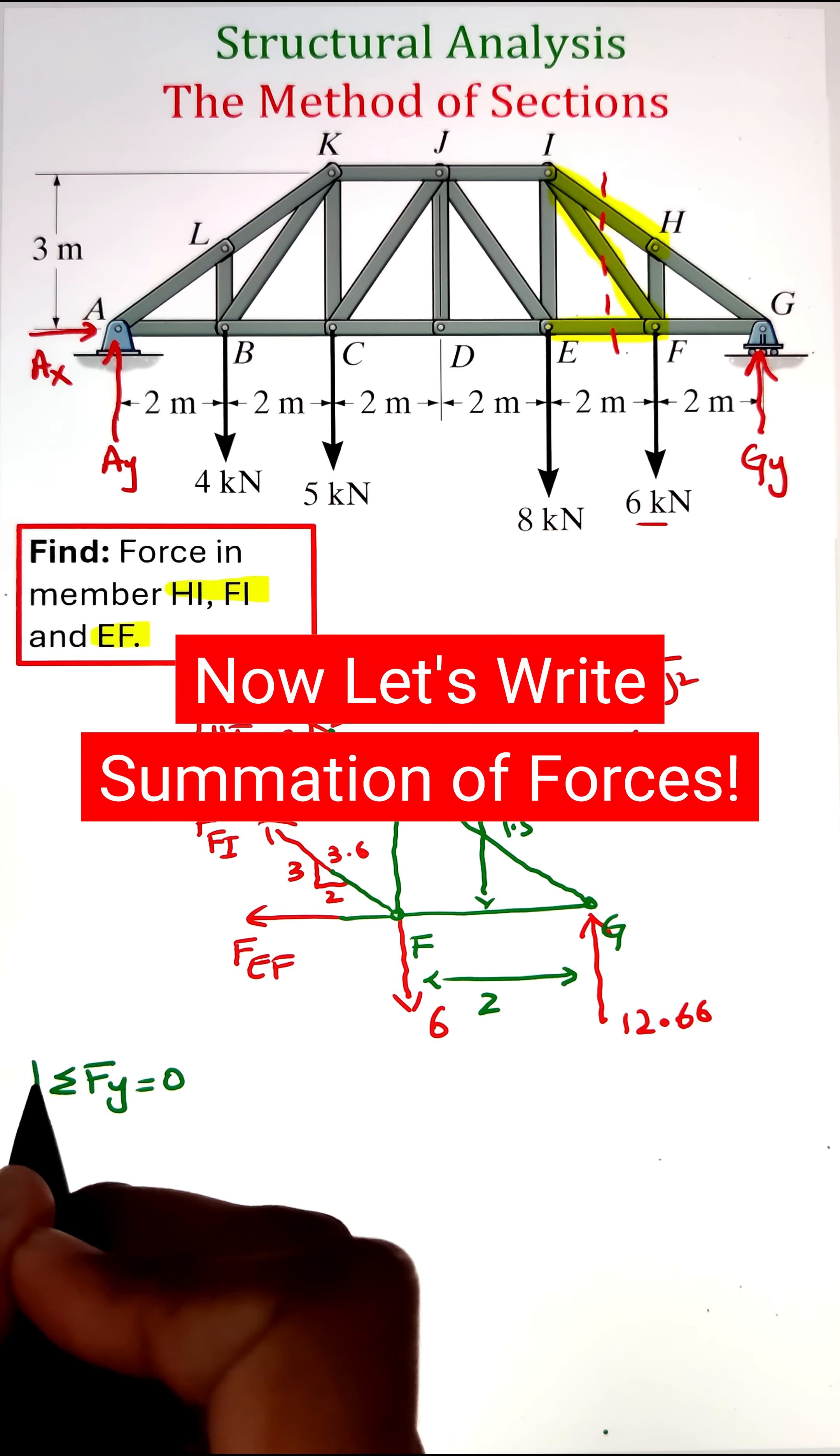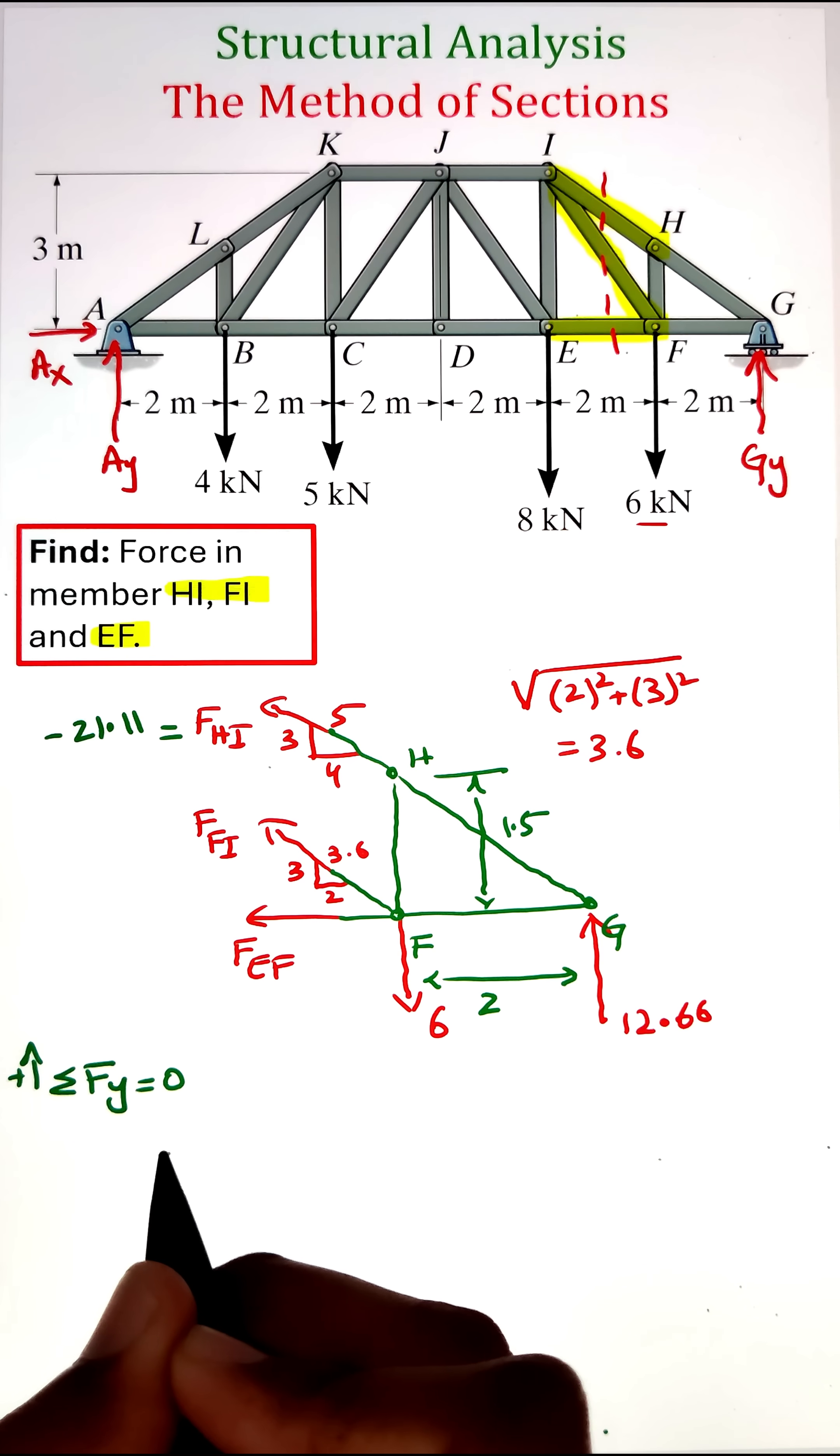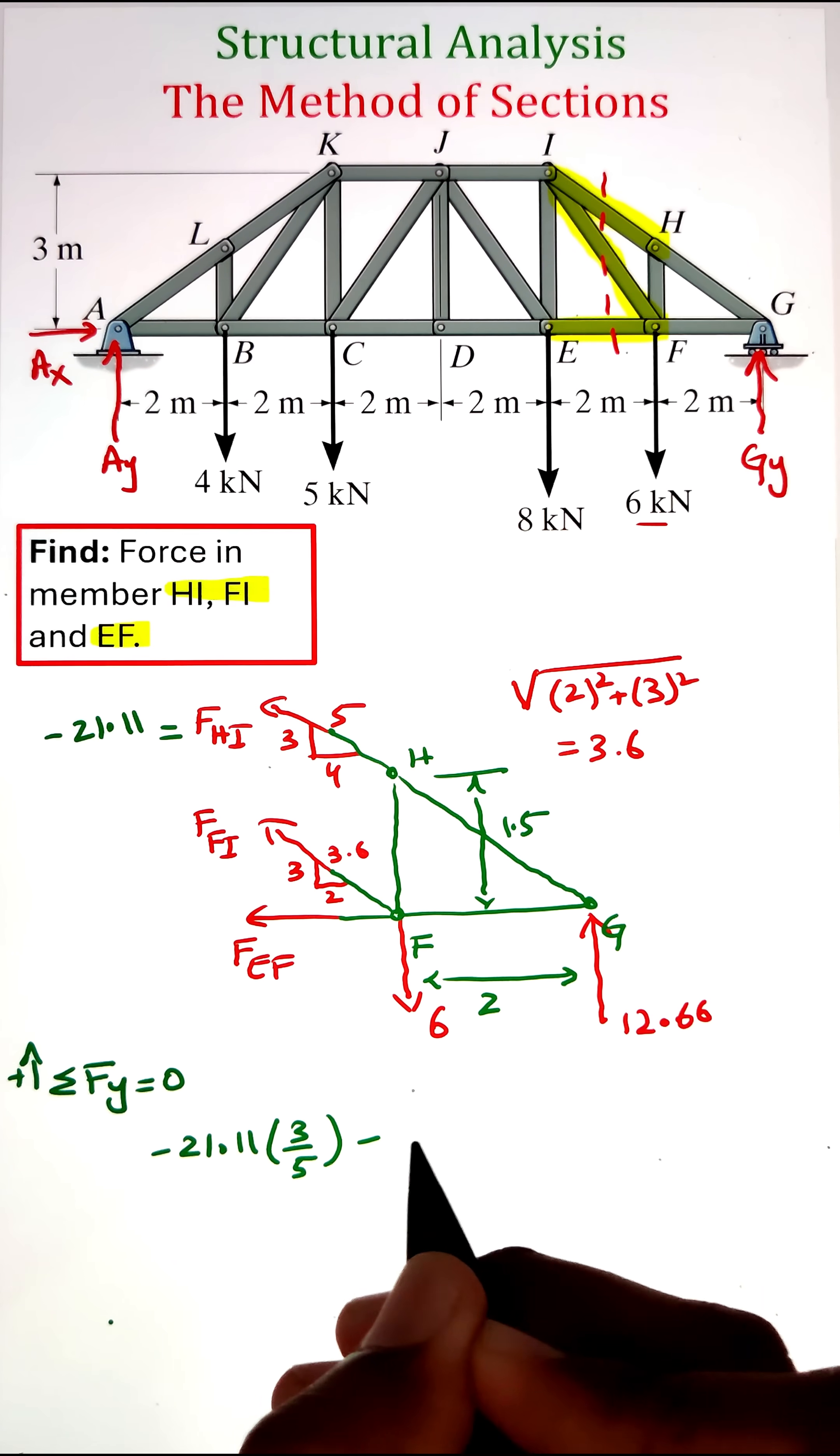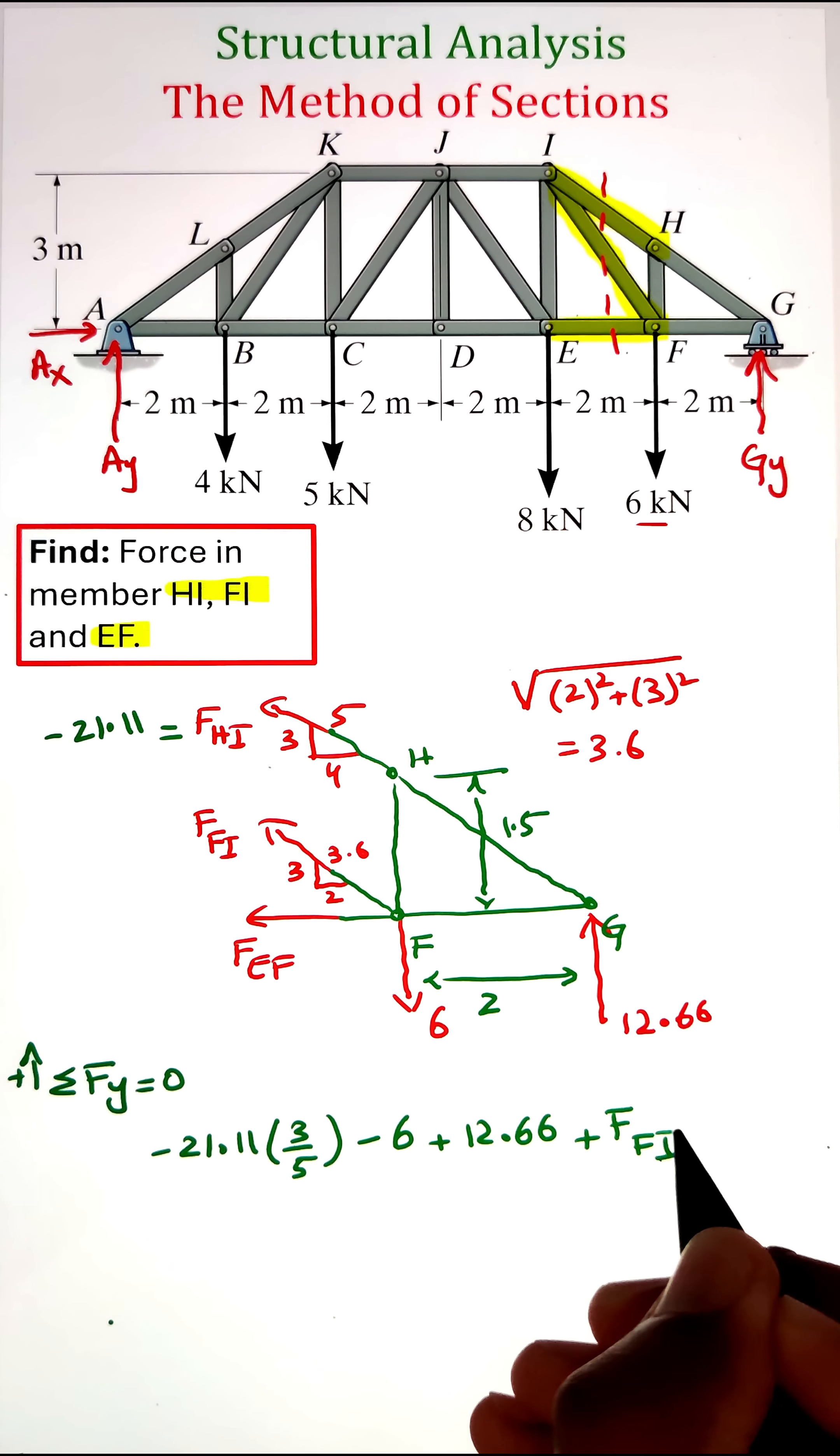Next, I can write the summation of forces along the y-axis equals zero. We have a vertical component of force FHI calculated by multiplying negative 21.11 by 3/5. Then we have 6 kilonewtons going downward and 12.66 kilonewtons at G going upward.